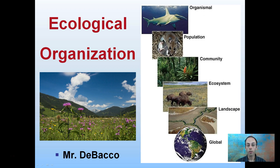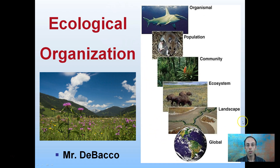Here we're going to look at ecological organization. Starting at the very basic level of the organism, we can build up to a population, which can lead to a community, an ecosystem, a landscape, and a global view. This is just that general ecological organization, and we're going to go into this in a little bit more detail now.